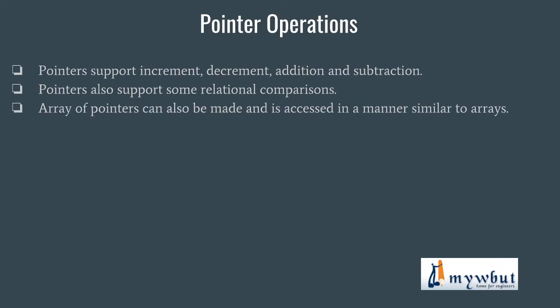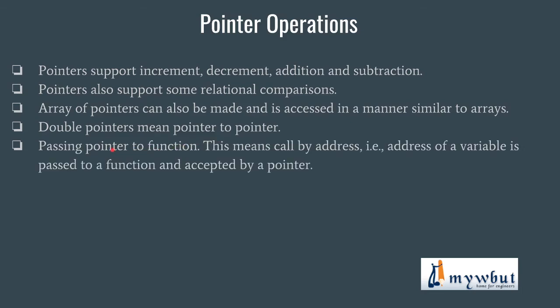Pointer supports several operations like increment, decrement, addition, and subtraction — basic arithmetic operations. Pointers also support relational comparison. We can also make arrays of pointers. Next, we have double pointers, meaning pointer to pointer. Pointers can be passed to functions. One important thing: C does not support call by reference, but it supports call by address. Call by address and call by reference are different concepts. C supports call by address but not call by reference, whereas C++ supports both.